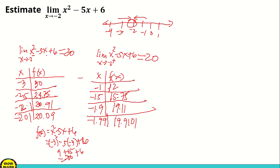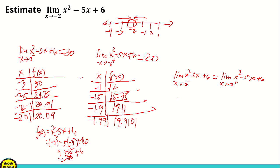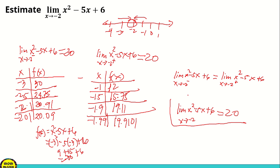As you can see, our one-sided limits are equal: the left-hand limit equals the right-hand limit, both equal to 20. Since both one-sided limits are equal, we can say that the limit of x squared minus 5x plus 6 as x approaches negative 2 is equal to 20.